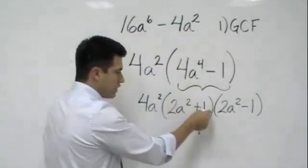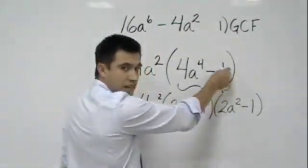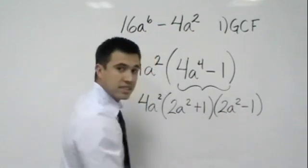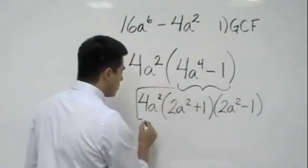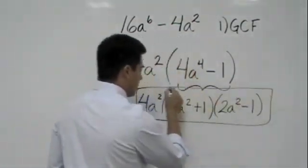Because the terms in here are just the square root of this, and the terms right here are the square root of that, and we just put our plus and our minus, and then we just bring down the greatest common factor. So, this would be the answer, right here.